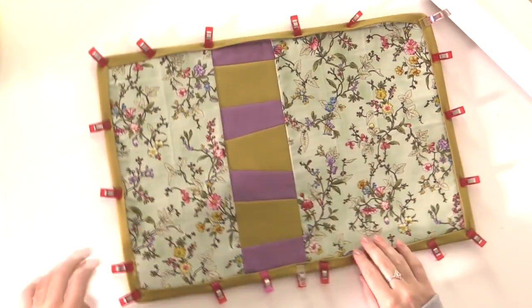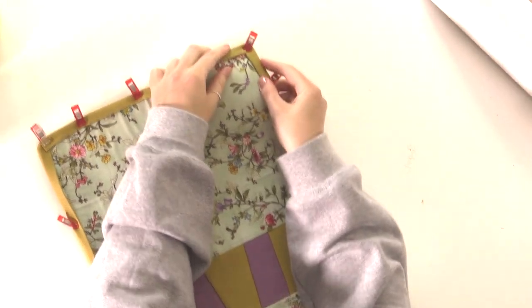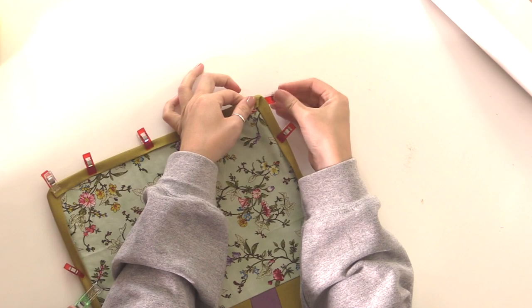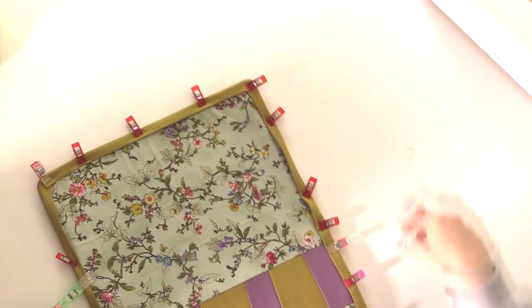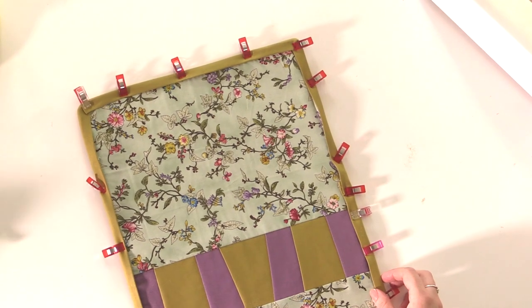So now you want to wrap the bias binding over to the front and clip in place. With the corners, as you do it you'll see they kind of fold neatly into a nice little corner. That's Vienna helping me out there. She thinks she helps.